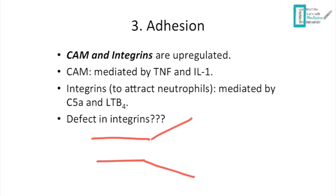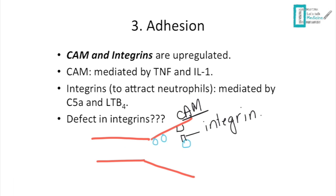After the selectins slow the neutrophils, there is another molecule called CAM (cellular adhesion molecule) on the endothelial surface, and the neutrophils express integrins. Both are upregulated: CAM is mediated by TNF and IL-1, while integrins are mediated by C5a and leukotriene B4, which attract neutrophils. Together, integrins and CAMs bind to cause firm adhesion at the site.